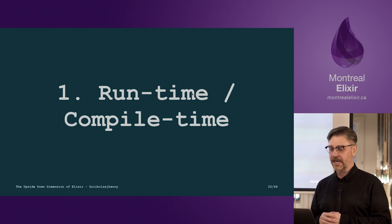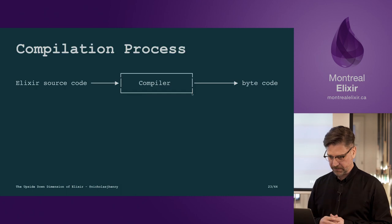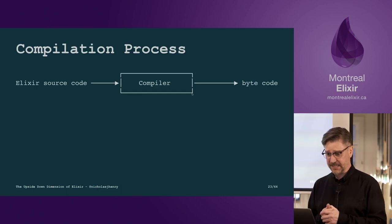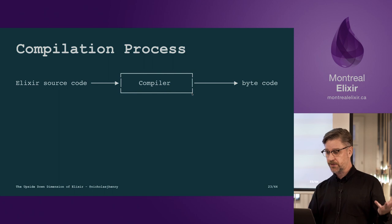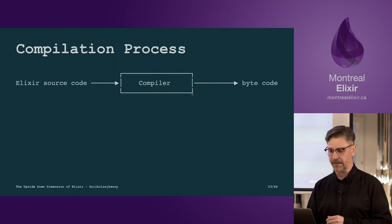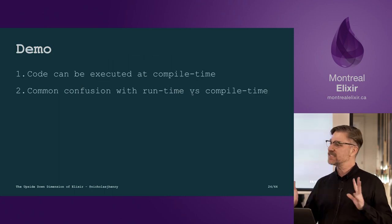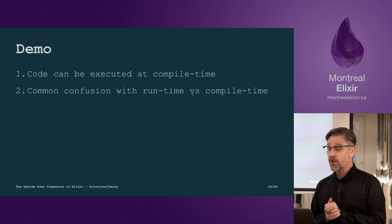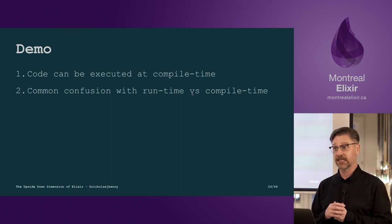Let's look at a comparison of runtime versus compile time. There's a compilation process where we take our source code, pass it through a compiler, and generate bytecode, which is executed by the Erlang VM. We're going to do a basic demo to show that we can execute code at compile time instead of runtime, and then look at an example where runtime gets confused with compile time — something that shows up on the Elixir forum once in a while.